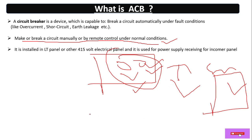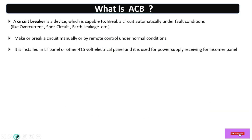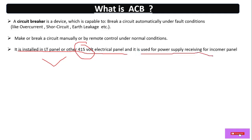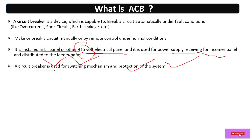Generally, ACB is installed in an LT panel or other 415-volt electrical panels. It is used for power supply receiving as an incoming supply and distributes through feeder panels. A circuit breaker is used for switching mechanism and protection of the system.